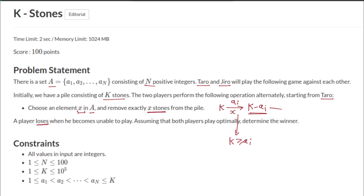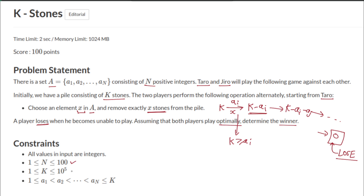The losing state for any player is when the pile reaches zero stones. After some number of moves, the state where the number of stones in the pile is zero is a losing state for whoever faces it. Assuming both players play optimally, we need to determine the winner. Constraints: N is up to 100, K is up to 10^5, and array values are bounded by K.